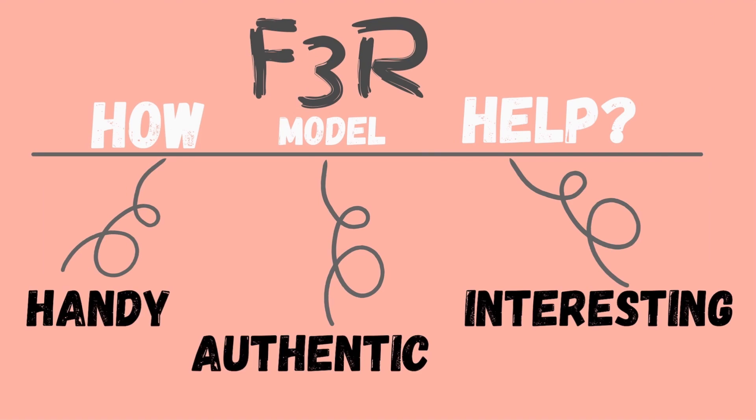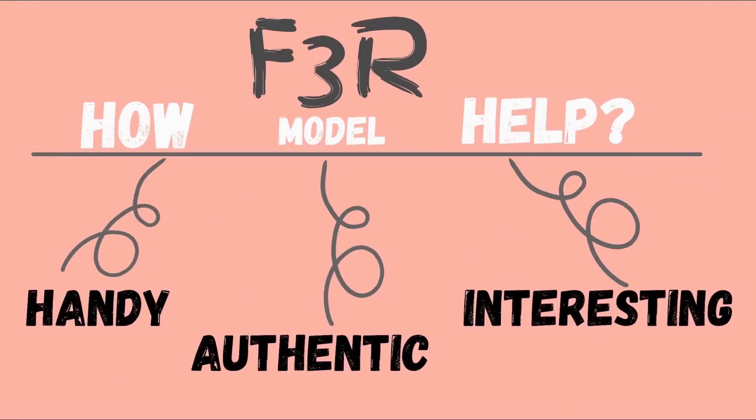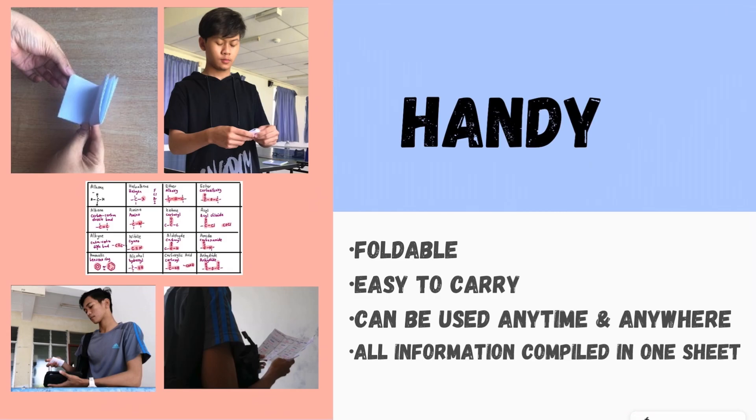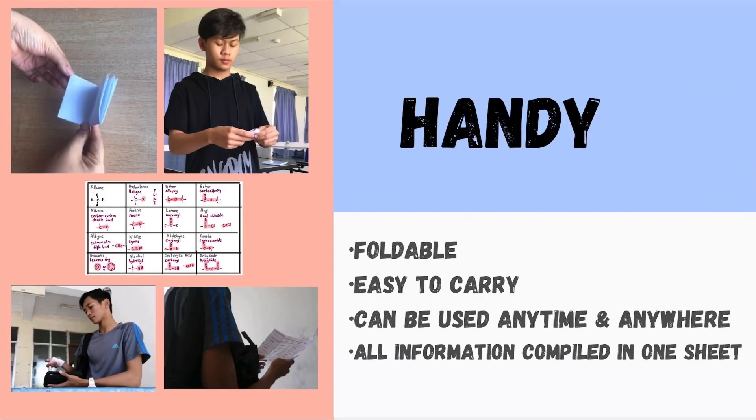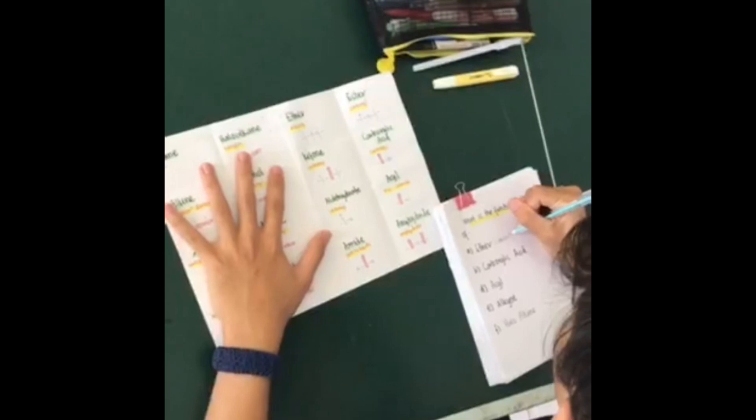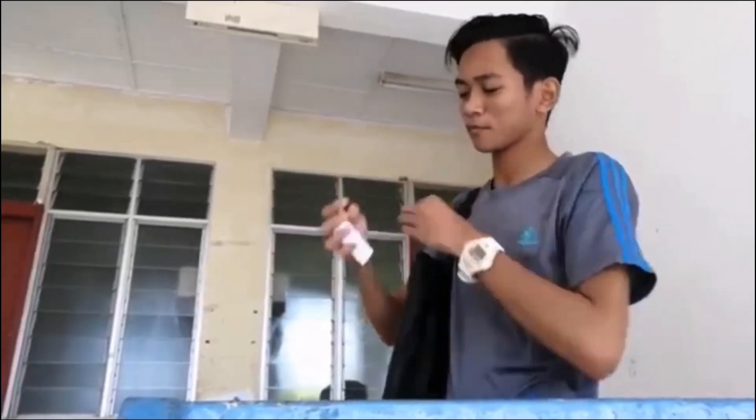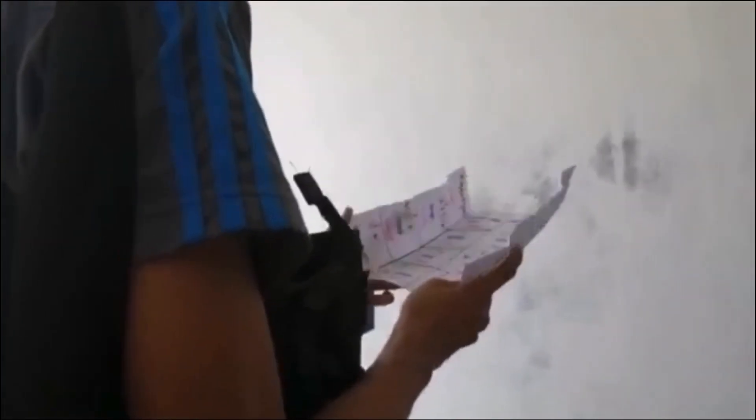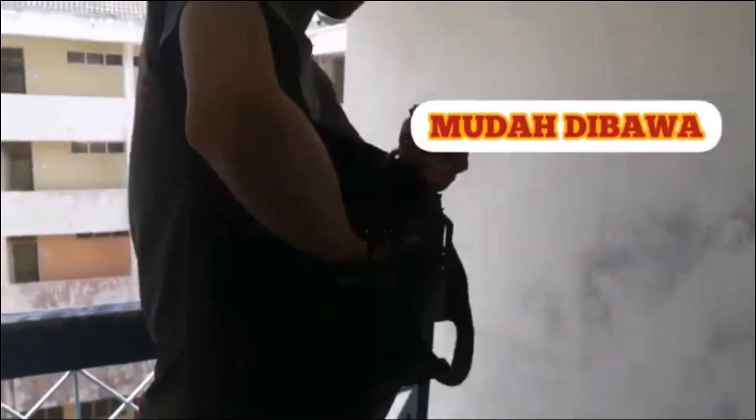The solution to these problems - how does this model help? With the hashtag handy, authentic, and interesting, these three features are the key to how this model helps. It is simply handy because it is foldable, easy to carry, and can be used at any time and anywhere. All information is compiled in one sheet, so you can refer to it at any time. You can bring it in your wallet, for example. We strongly believe that if you can bring the knowledge anywhere around you, it will stick with you.